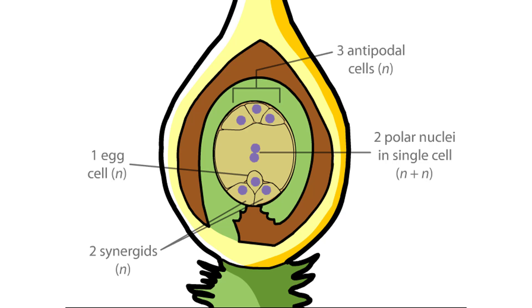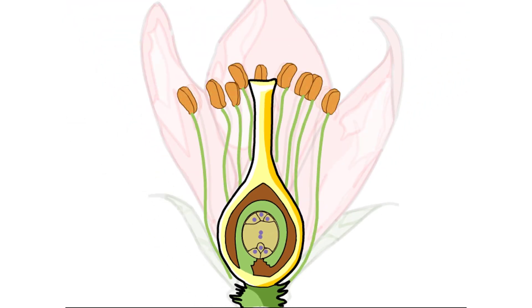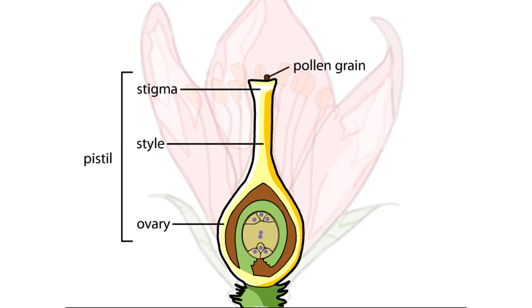Before this can happen, the male gametes, the sperm, must travel to these cells within the female's reproductive organs. To reach the embryo sac, a pollen grain that has landed on the stigma begins to germinate, sending a long pollen tube through the style and ovary.